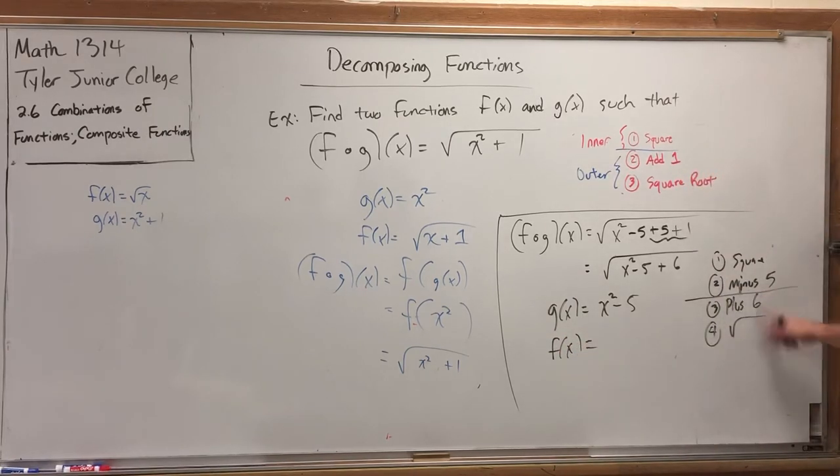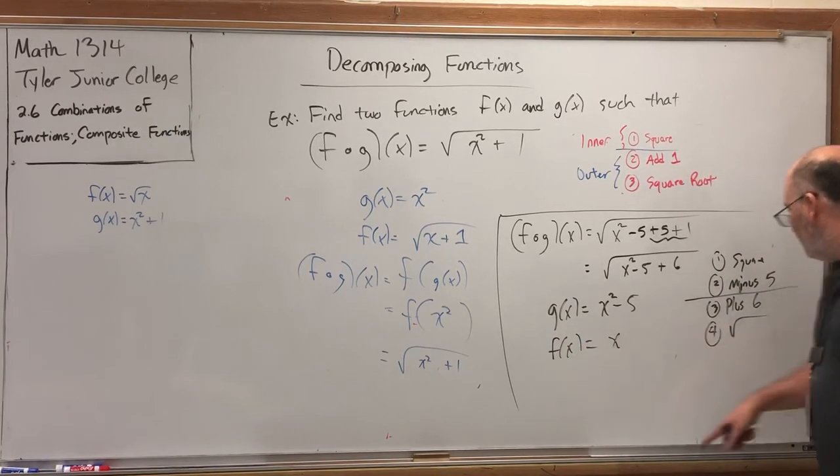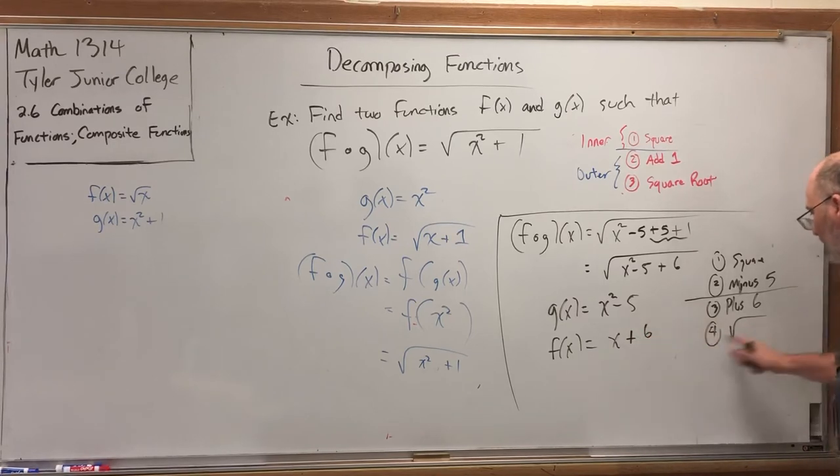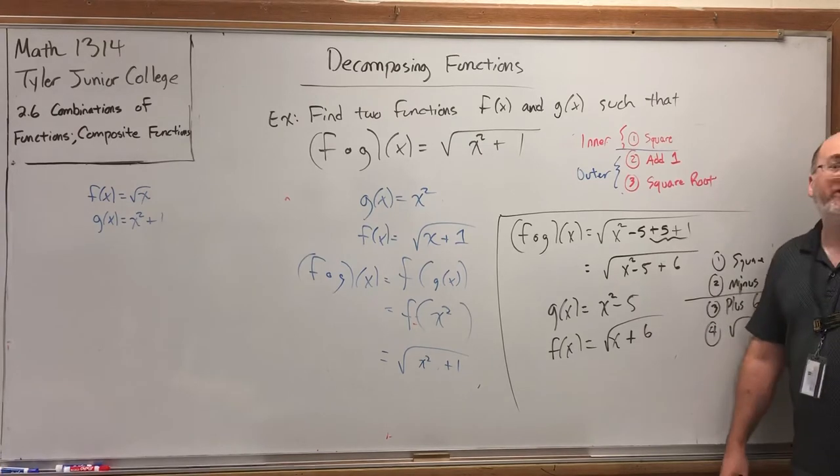would be the function that does the last two moves. Give me something, add 6 to it, and then take the square root.